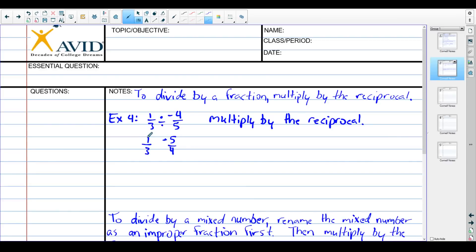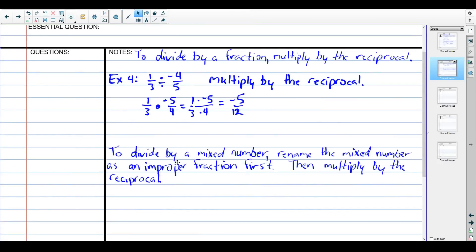The first number will never change, so one third stays as one third. And then this division now becomes multiplication. Multiplication is not that hard. So we have one times negative five over three times four. One times negative five is negative five. Three times four is twelve. So one third divided by negative four fifths ends up being negative five twelfths. Not too bad, just one extra step. You flip the fraction and then multiply instead. At no point do you ever actually divide by fractions.